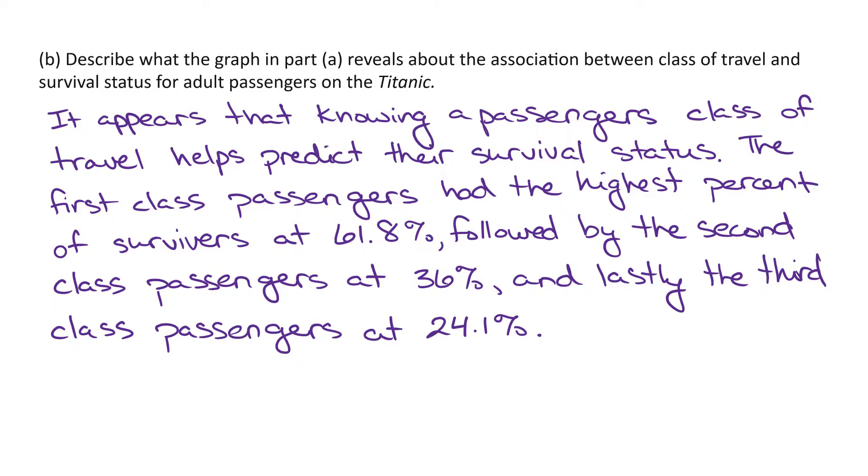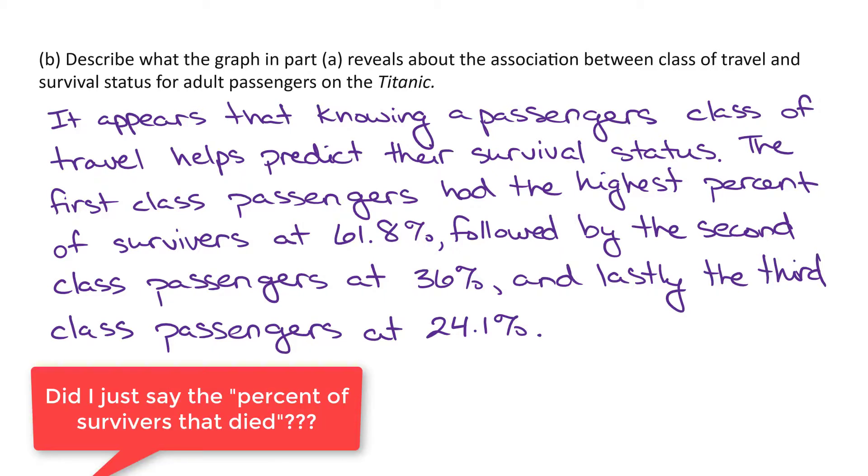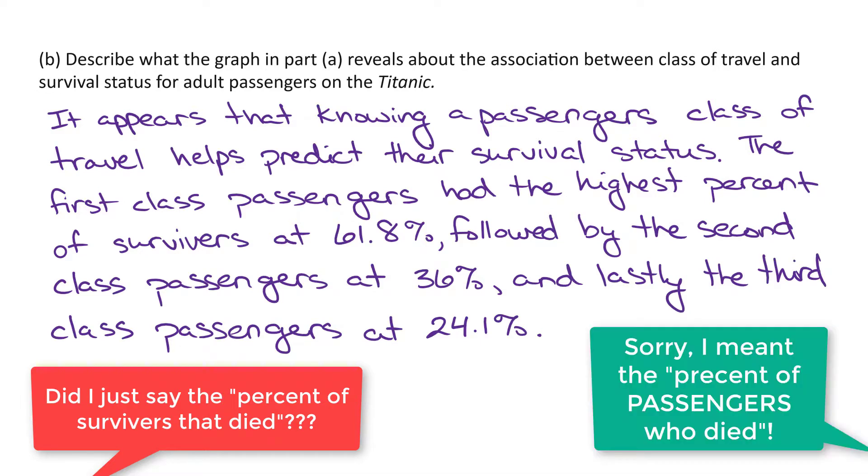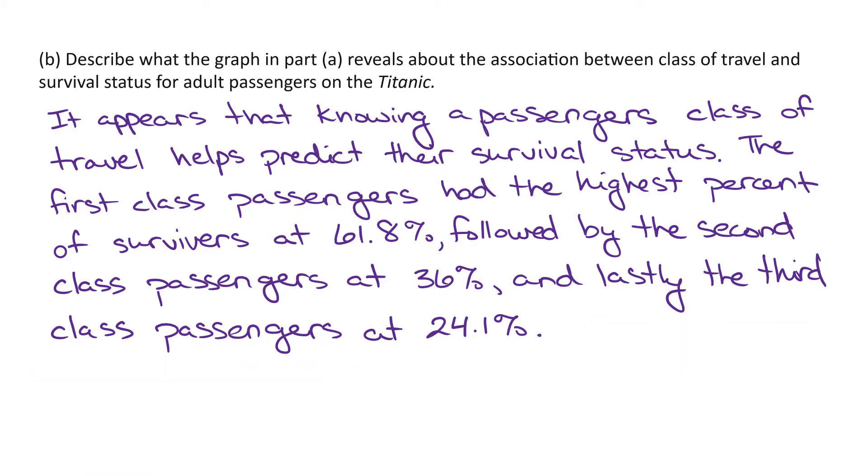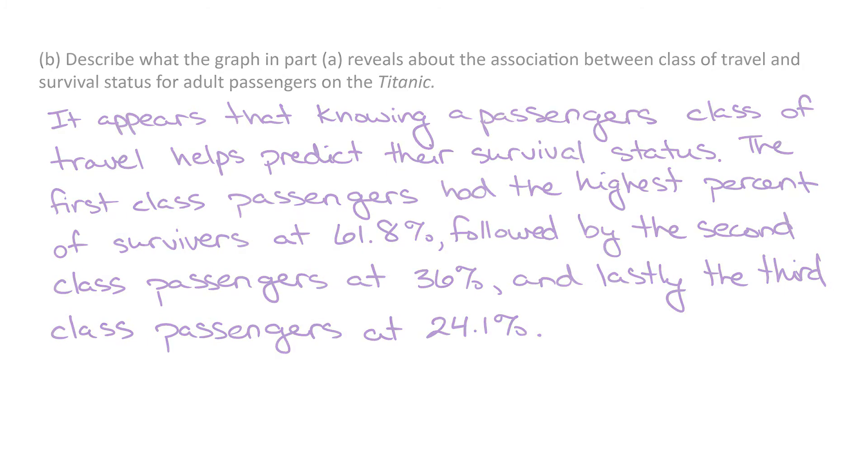A couple things to point out: you could absolutely write an equivalent solution, which would receive full credit looking at the percent of survivors who died. So you'd be using those complement probability or complement percents. And also, when you're writing answers like this, you do want to come up with a statement at the beginning. What are you trying to say is going on between these two variables? So we're saying that it looks like the passenger's class of travel helps predict the survival status. And then next, you're backing that up with some information that should be apparent through your graph. So since we're looking at the percents in our segmented bar graph, we're just pulling in some percents for each of those categories.